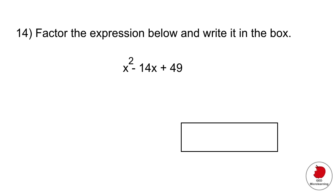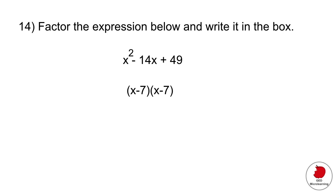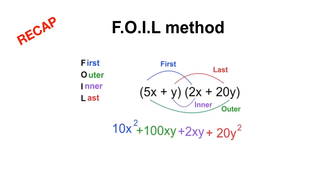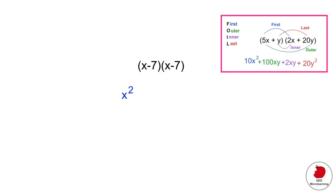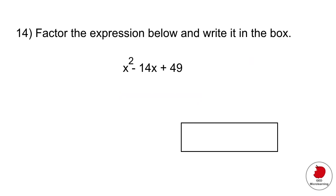This question asks you to factor an expression and write it in the box. Find a number that divides both terms — the number is 7, since 7 divides 14 and 49. Factoring it out gives (x minus 7) multiplied by (x minus 7). You can confirm using the FOIL method — first, outer, inner, last — which gives x squared minus 7x minus 7x plus 49, simplifying back to that expression.